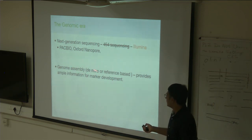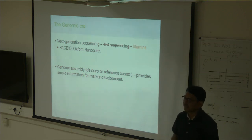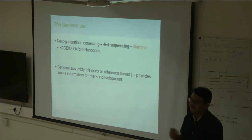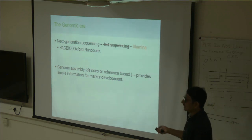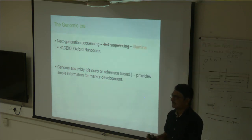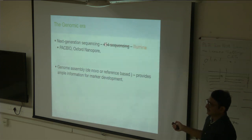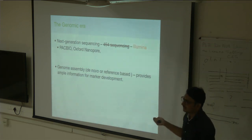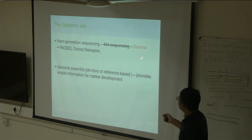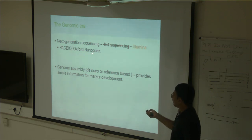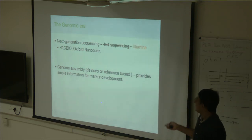The problem with NGS for non-model systems is that without a reference sequence, assembly must be done de novo, which is less accurate, expensive, and time-consuming. However, high computational power and big data analysis have largely bridged these gaps. The major NGS platforms include Roche 454, which was popular in 2007 but is now discontinued, and currently Illumina, PacBio, and Oxford Nanopore. Among them, Illumina is the most powerful and widely used platform.